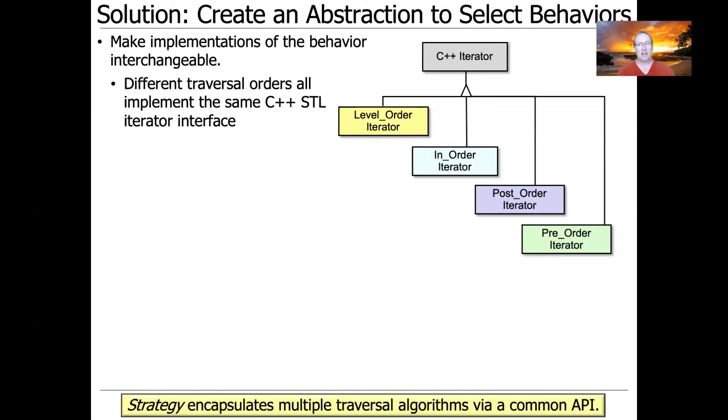And then we're going to be able to make the implementations pluggable. So each different iterator strategy will look the same, even though the algorithms used to implement them will be quite different, as we've talked about before. So different traversal algorithms will all implement the same C++ STL iterator interface. So the fancy way of saying that is that strategy will encapsulate multiple traversal algorithms behind a common application programming interface, or API.